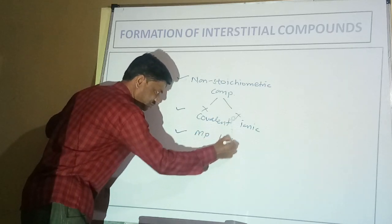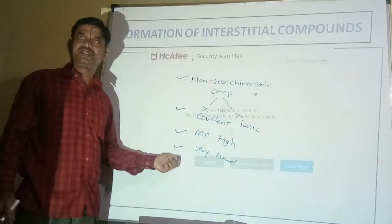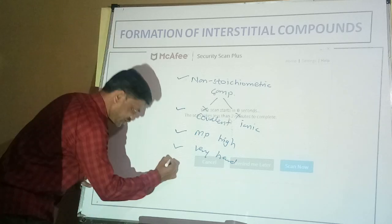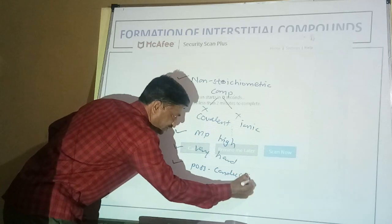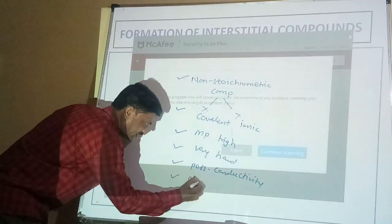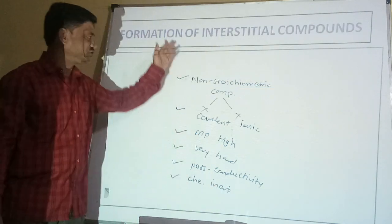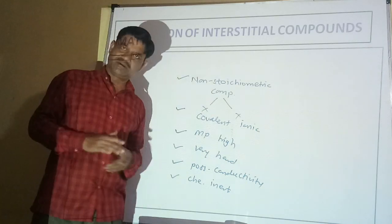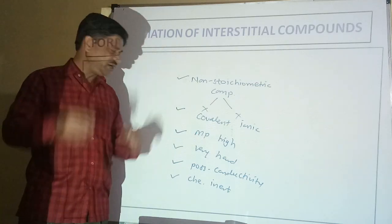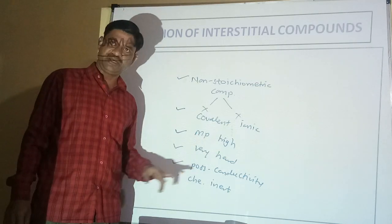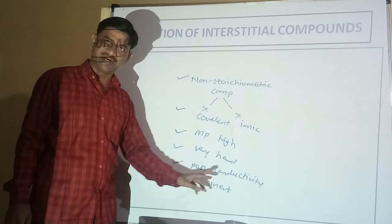These interstitial compounds have very high physical constants — their melting point values are found to be very high. They are found to be very hard compared to original metals. They also possess conductivity, and they are chemically inert. So these are the important properties: non-stoichiometric, bonding neither covalent nor ionic, high physical constants, very hard, possess conductivity, and chemically inert.